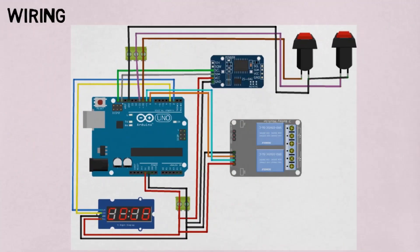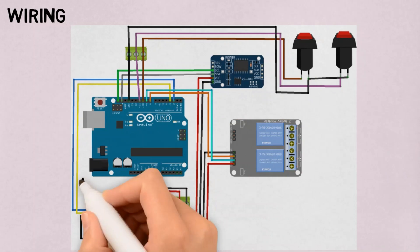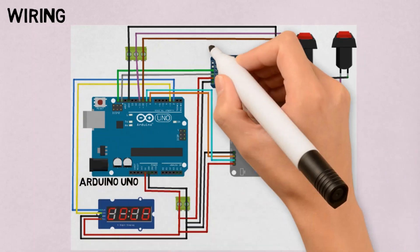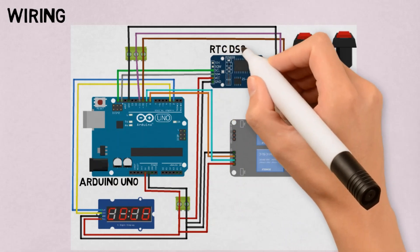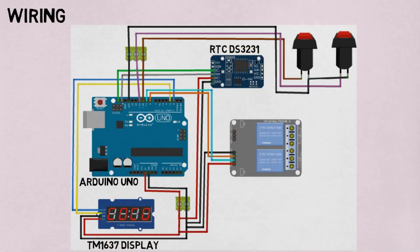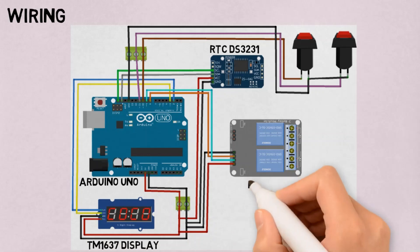This is the wiring diagram. In this concept, we need an Arduino Uno, a real-time clock device RTC DS3231, a time display, relays, buttons, and lamps.